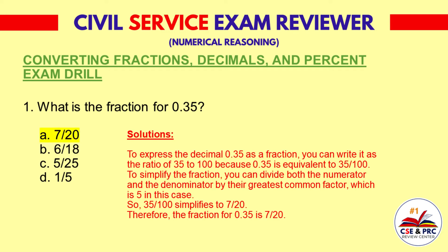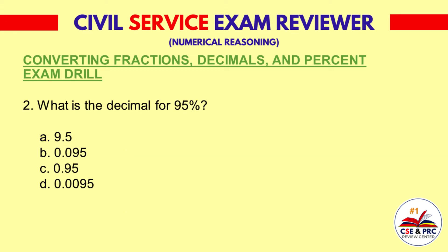Solutions: To express the decimal 0.35 as a fraction, you can write it as the ratio of 35 to 100, because 0.35 is equivalent to 35 over 100. To simplify the fraction, divide both the numerator and the denominator by their greatest common factor, which is 5. So, 35 over 100 simplifies to 7 over 20. Therefore, the fraction for 0.35 is 7 over 20.